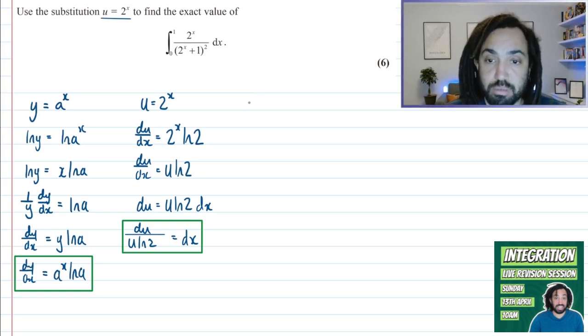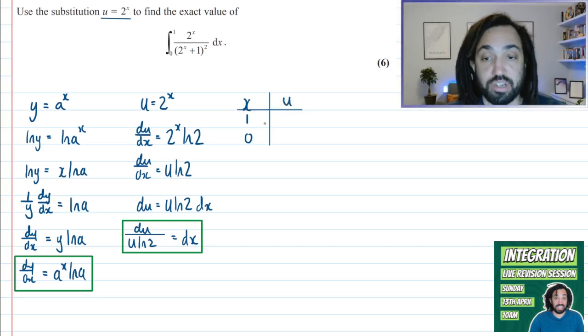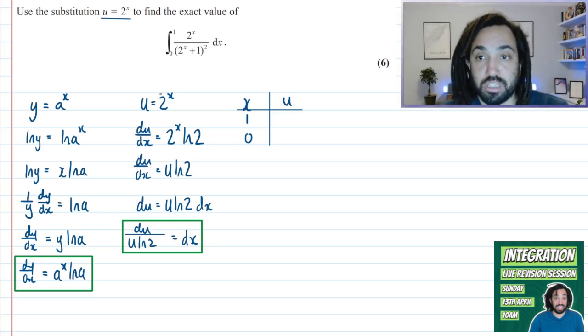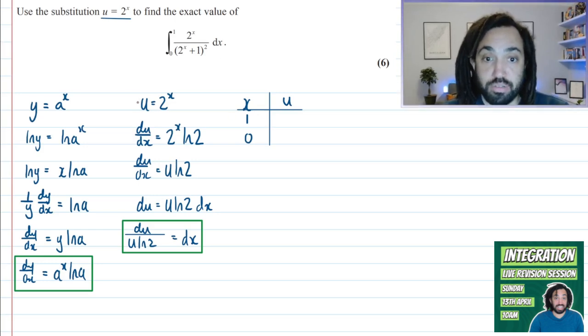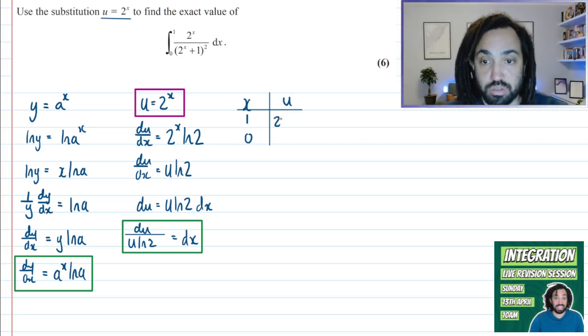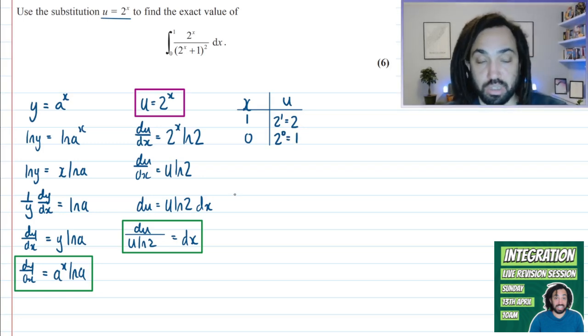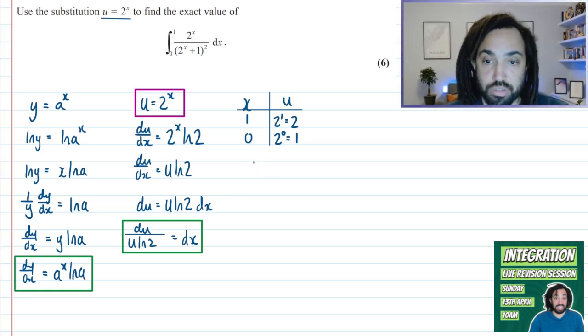And the next thing we need to do is remember to do the limits. So I don't want to forget that. So X is 1 and 0 are limits. So because we're swapping everything out for U, we need to figure out what the limits will be in terms of U. So subbing into the substitution itself, in here, we get that when X is 1, U is 2 to the 1, which is 2. And when X is 0, we get U is 2 to the 0, and 2 to the 0 is 1. Okay, great. So we've got our limits. And now I think we're good to transform this integral.